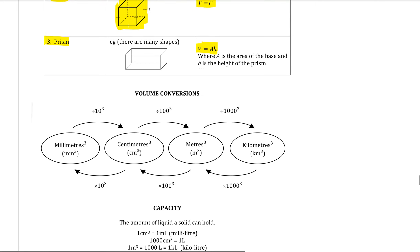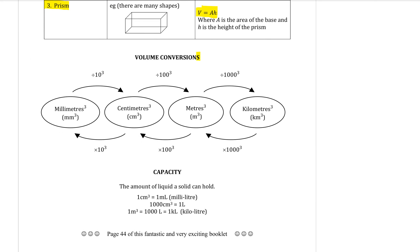The next thing to look at is your volume conversions. We've done one for length and one for area, and here it is again for volume. Millimetres cubed, centimetres cubed, metres cubed, and kilometres cubed are the units we use for measuring volume. To convert between them we use ten, hundred, and thousand, but when it's volume we apply powers of three — so dividing by 10³, dividing by 100³, dividing by 1000³, and multiplying if going in the other direction.